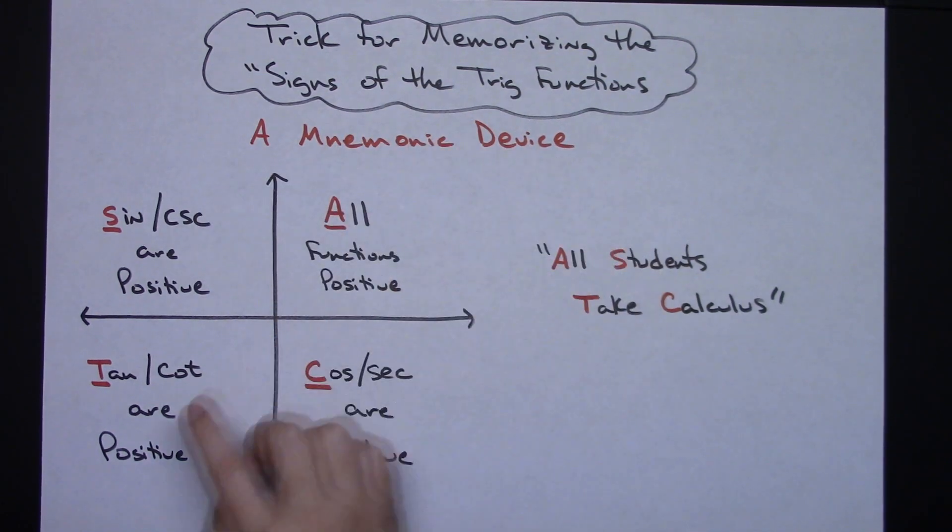But we're just going to memorize the positive ones. In the third quadrant, tangent, and to me cotangent goes with that. So tangent and cotangent are positive. Those are the only two that are positive in this third quadrant. All other ones are negative.